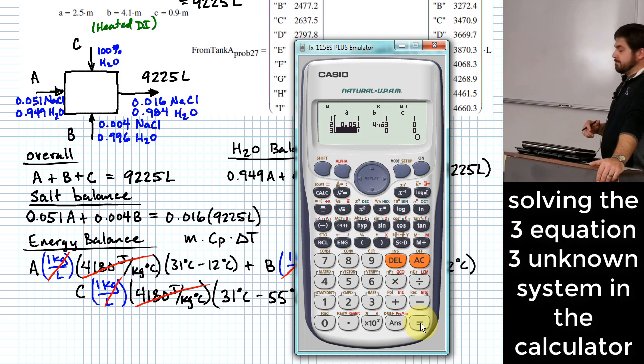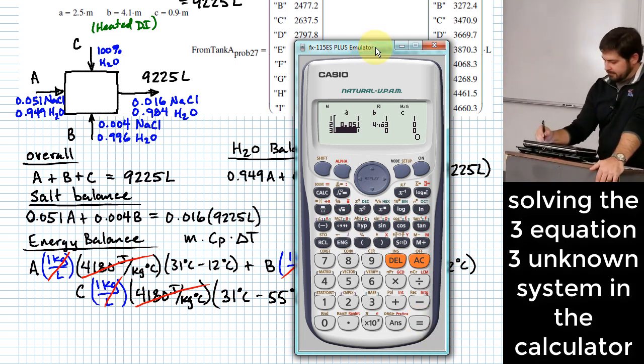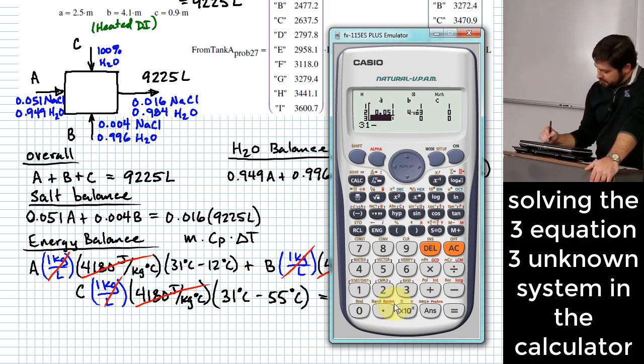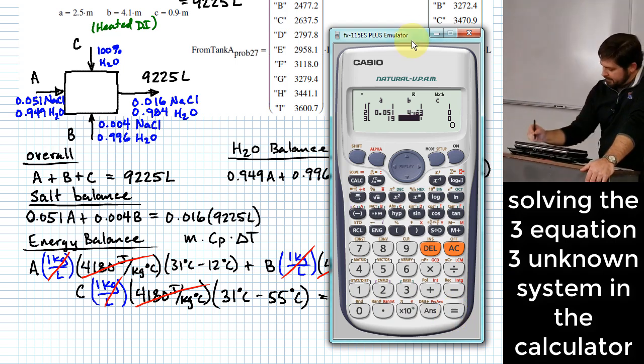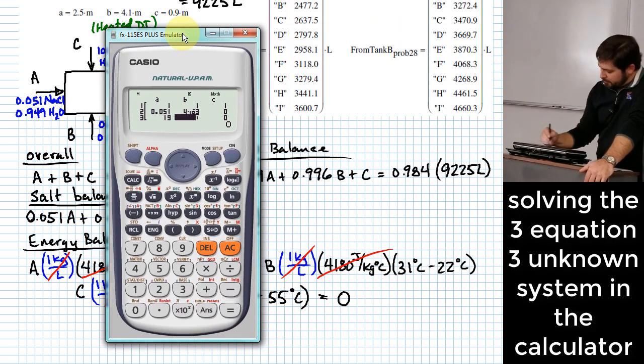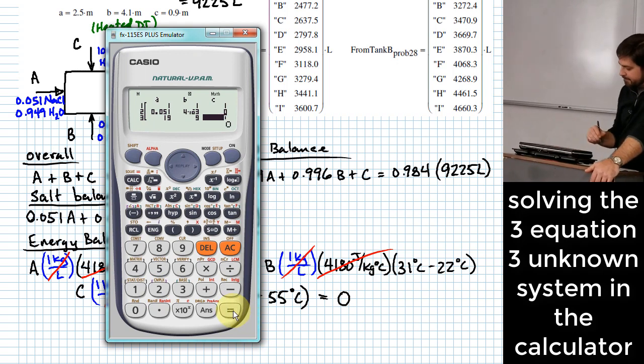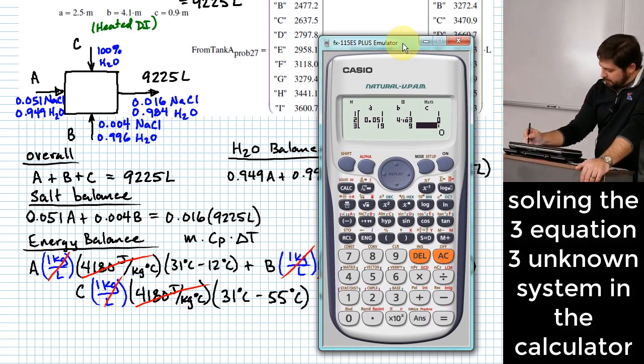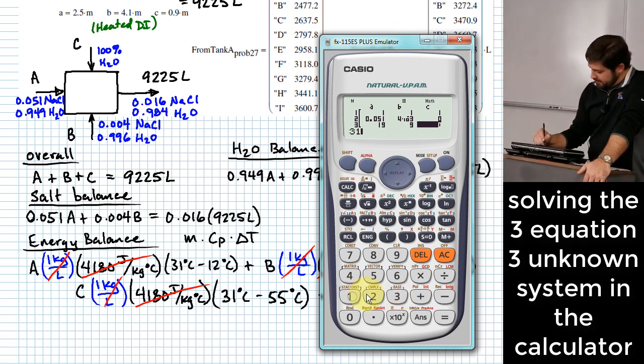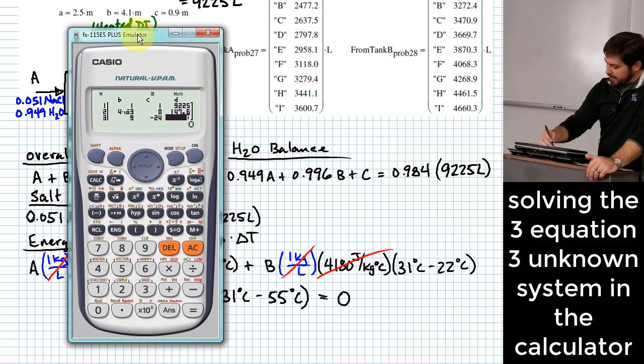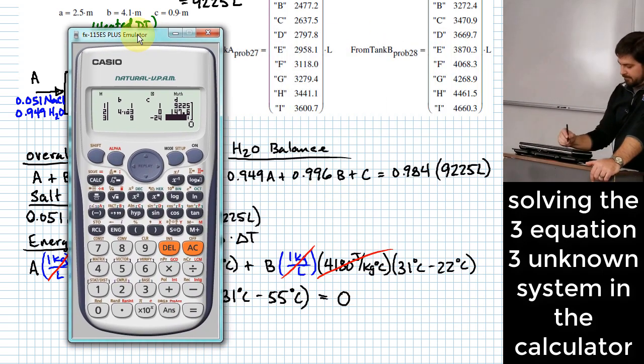Now, what about my third equation? Here I've got 31 minus 12 for my first entry. I have 31 minus 22 for my second entry. I have 31 minus 55 for my third entry. And then what do I have for my right-hand side? Zero.